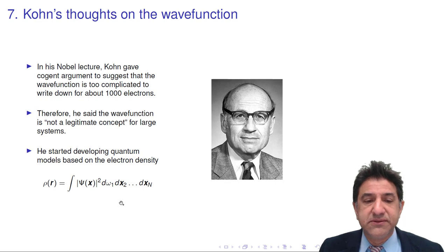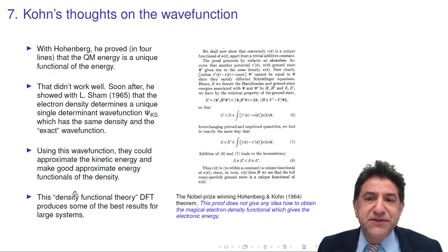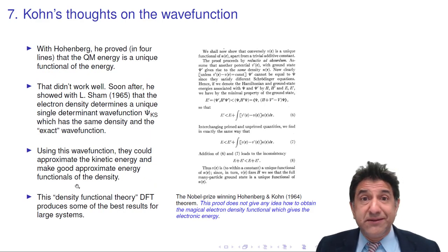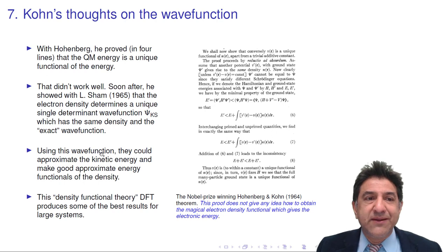And this would be the total electron density. What I've written down here is the electron density of one electron in the system. This would integrate to one. But if we want a total electron density, we would have to multiply this quantity by n. OK. So the wave function is useless, apparently, according to Walter Kohn.